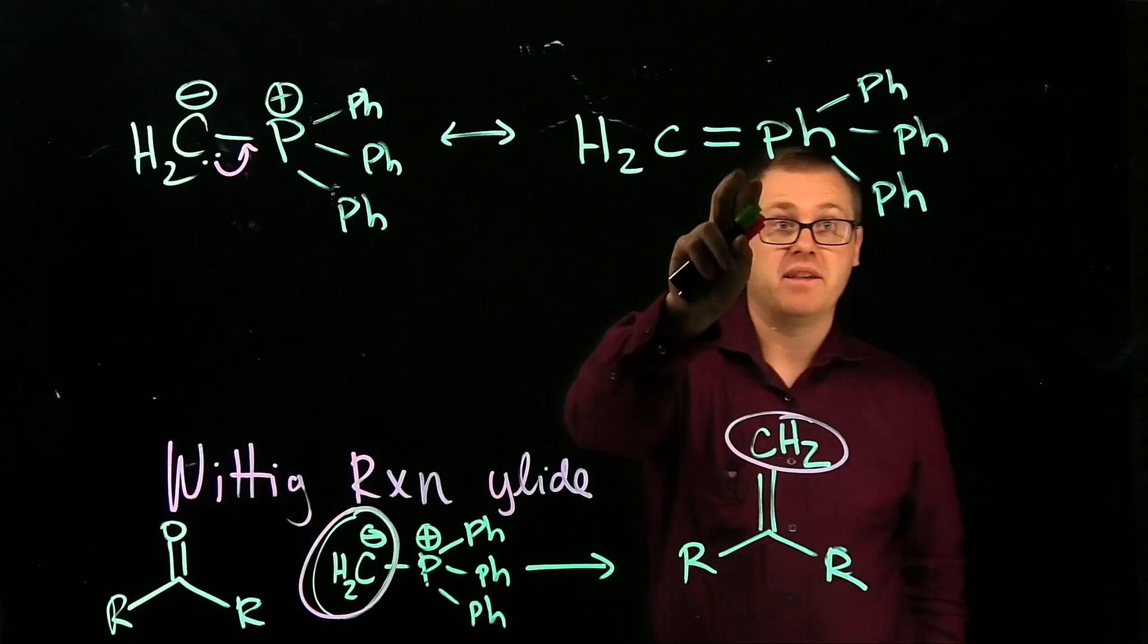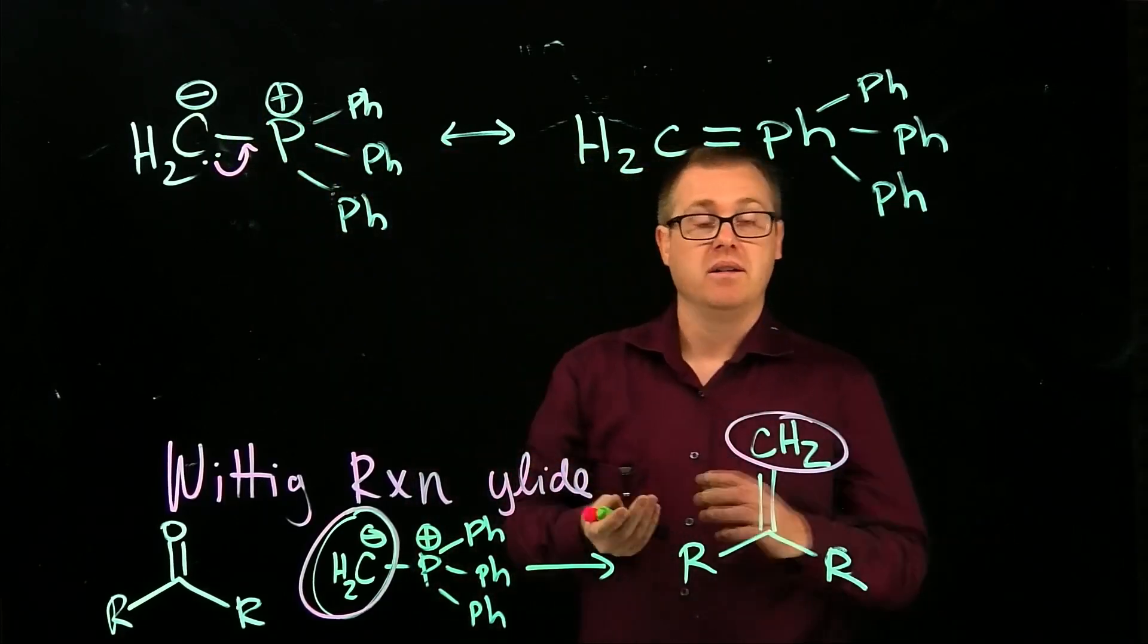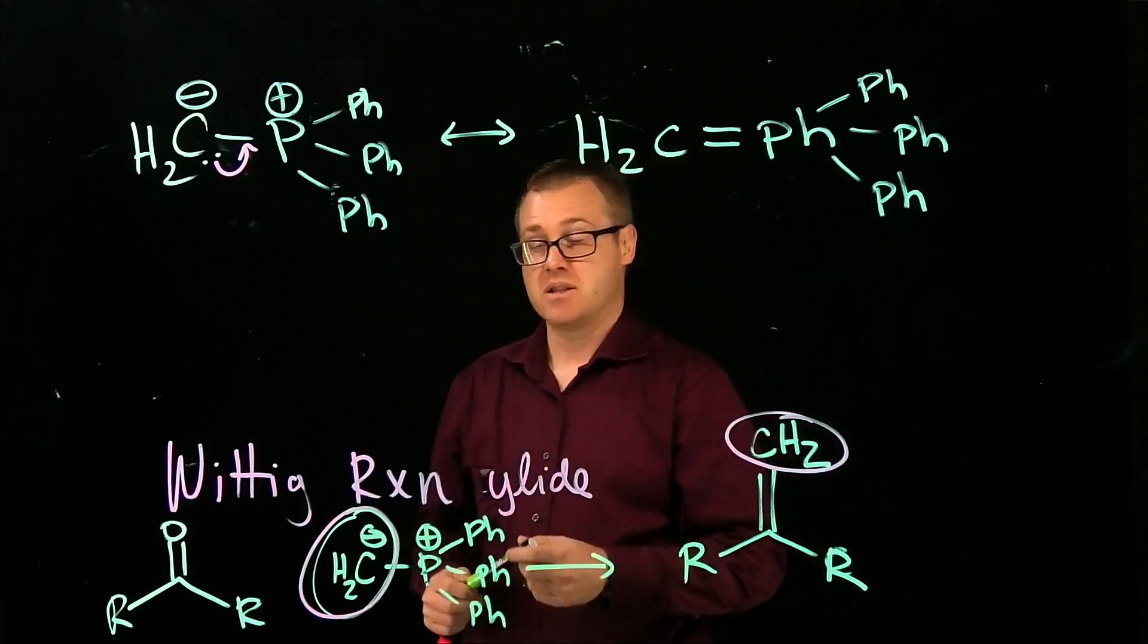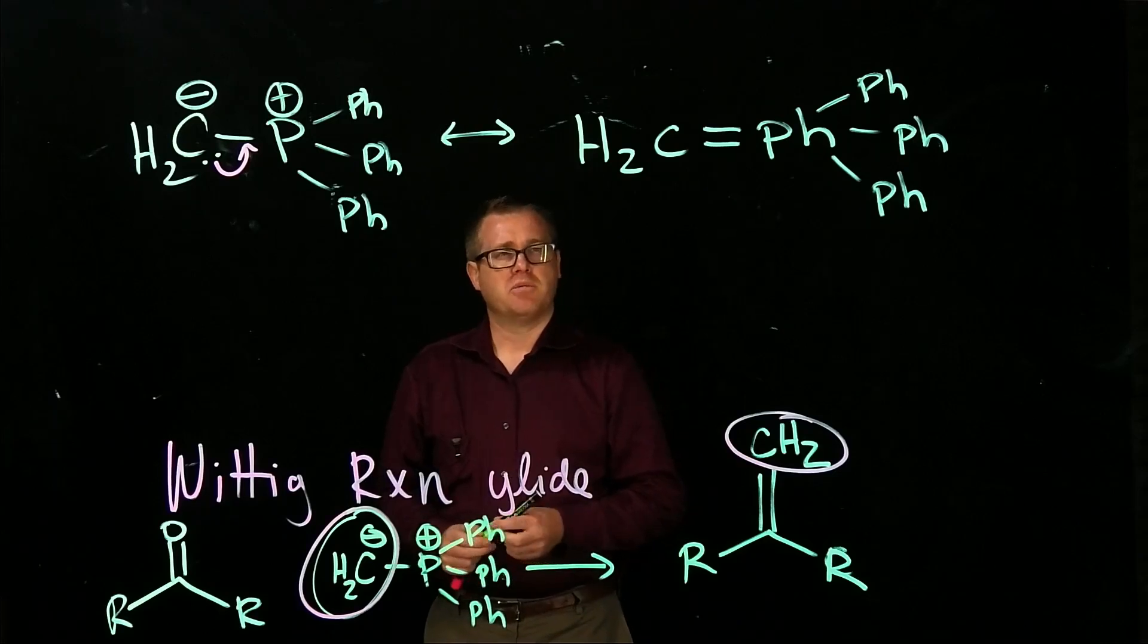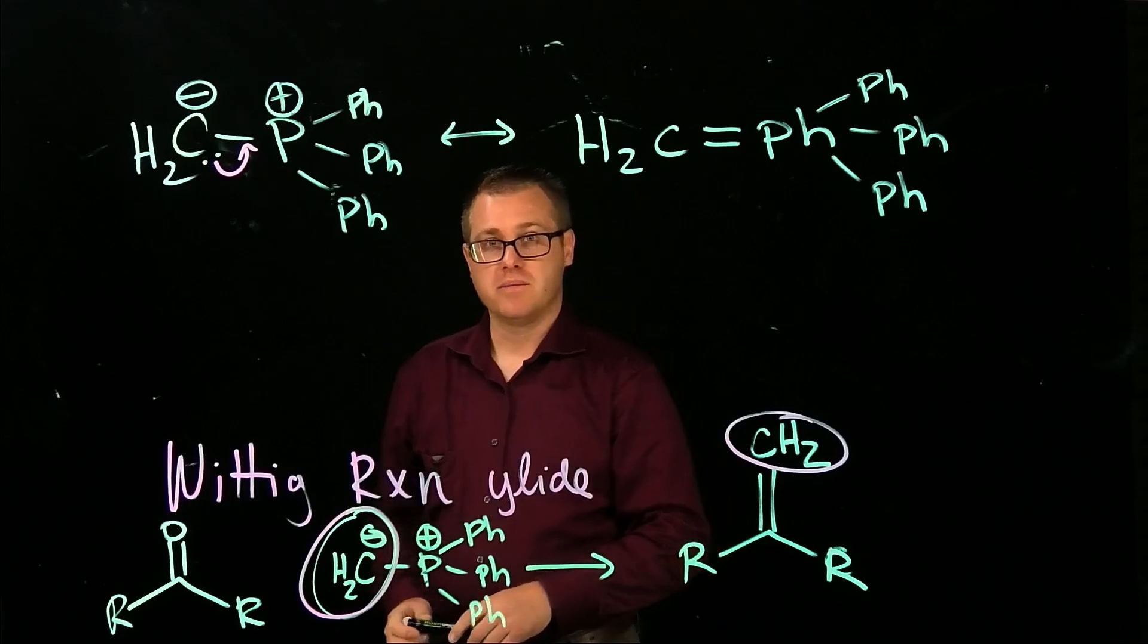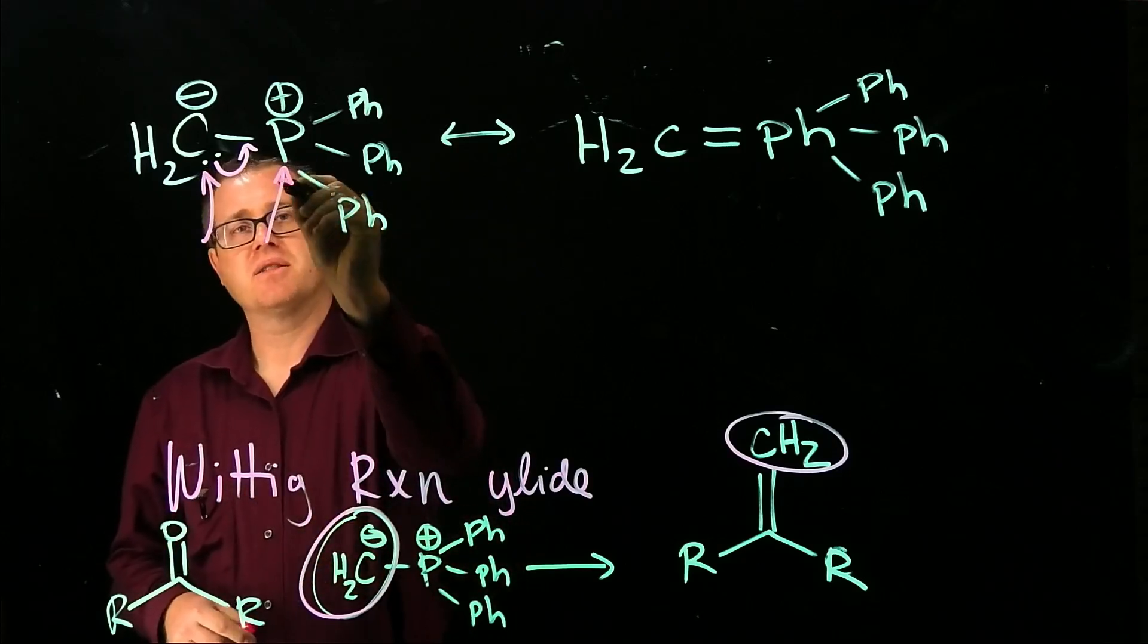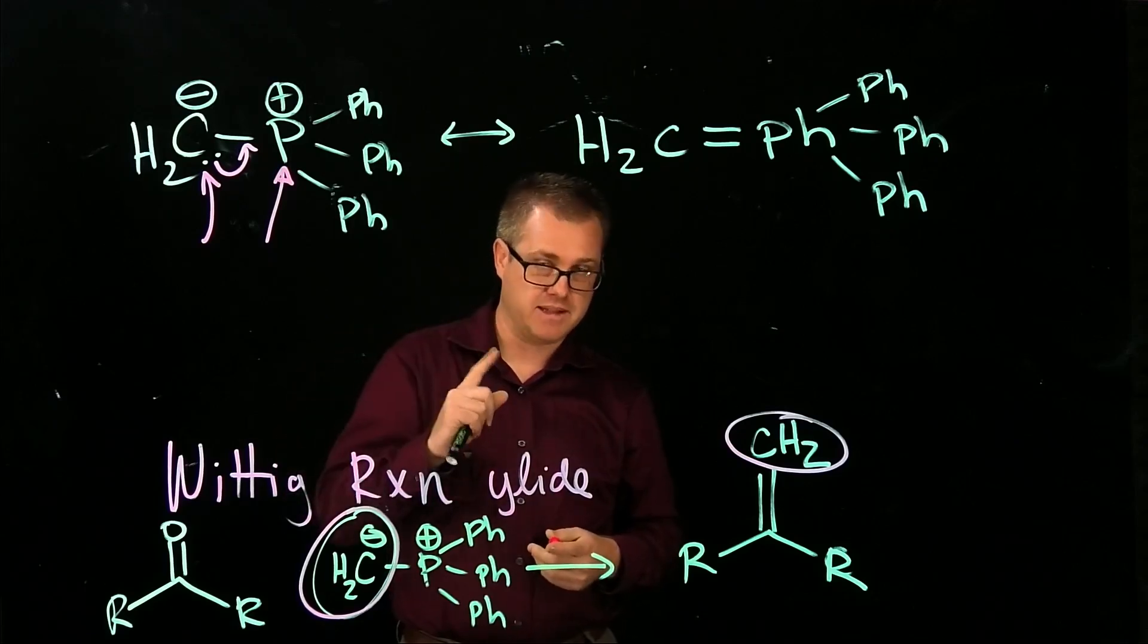Hopefully everyone would say this one, and the reason behind it is these have formal charges, these do not. Typically, what we learned in Orgo 1 is if there's no formal charges, that's going to be the more stable resonance structure, or another way of saying it, the resonance structure that contributes to the resonance hybrid more so, or contributes more. But in this particular case, that rationale does not work. And the reason why it does not work is because the carbon and the phosphorus are in different periods.